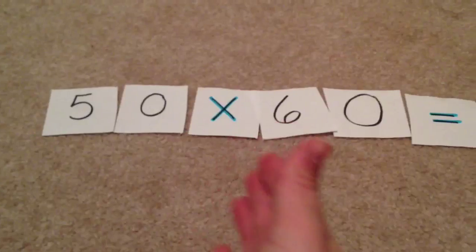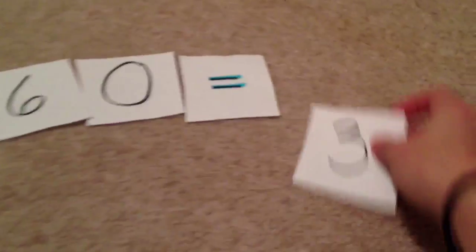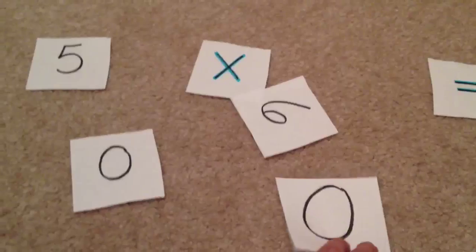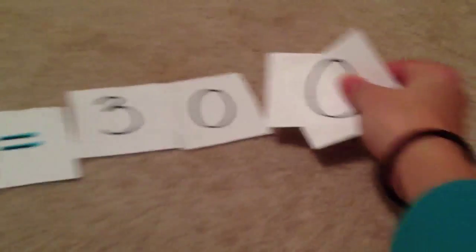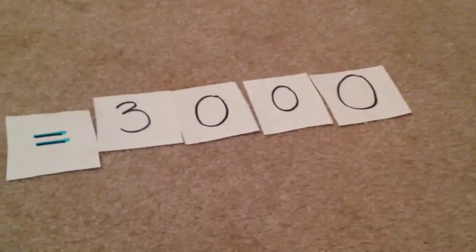Then if we have 50 times 60, we would do the same thing. We go 5 times 6 equals 30. We steal these two zeros and we tack them on to the end here, which makes our answer for 50 times 60: 3000.